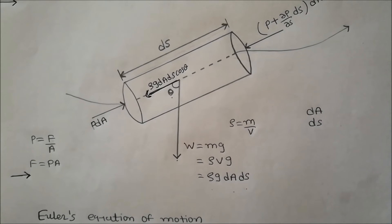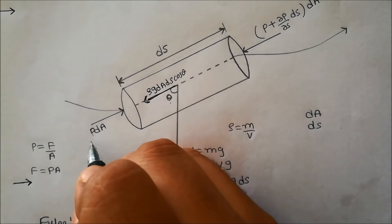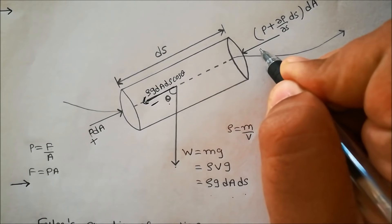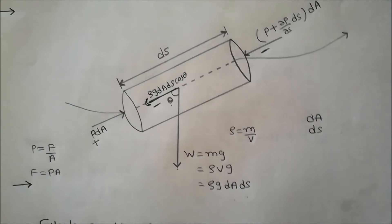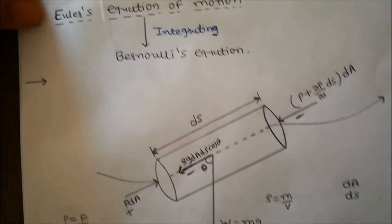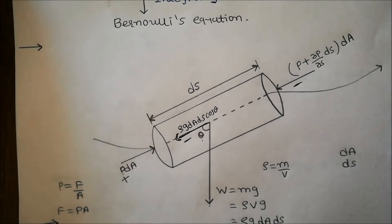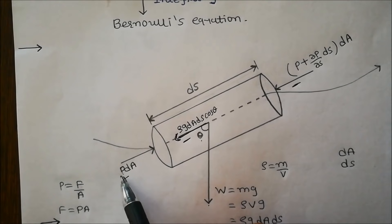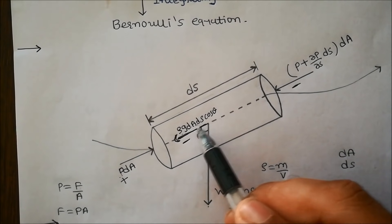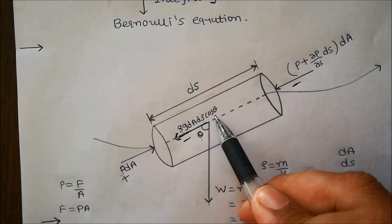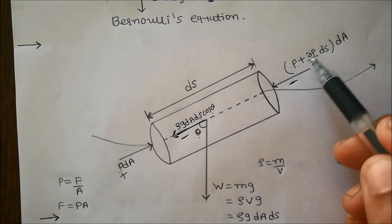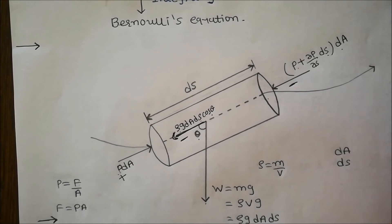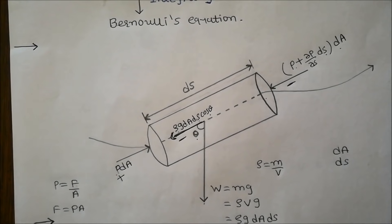Taking upward direction as positive and downward as negative, the resultant force is: P·dA minus ρ·g·dA·dS·cos θ minus (P + ∂P/∂S·dS)·dA.